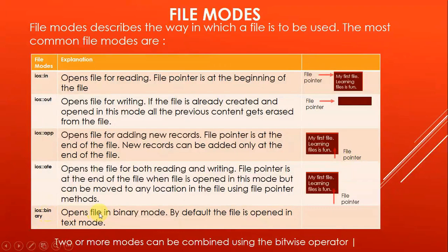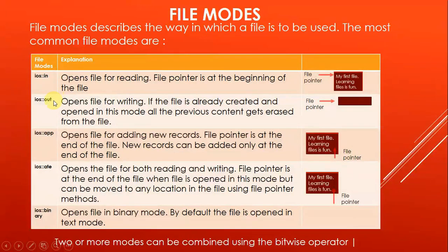ios::binary opens the file in binary mode. By default, files are always opened in text mode. Two or more modes can be combined using the bitwise OR operator — for example, ios::in combined with ios::binary, or ios::out combined with ios::binary. This way, one or more modes can be combined using the bitwise operator.